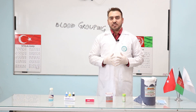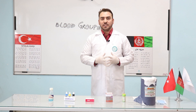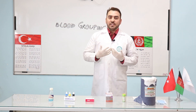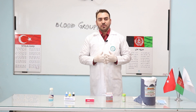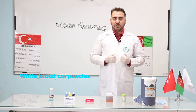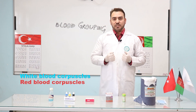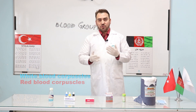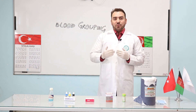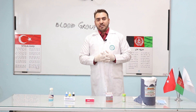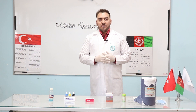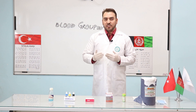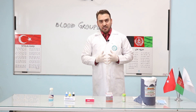An adult human has four to six liters of blood circulating in the body. The blood contains several types of blood cells, for example, white blood corpuscles or WBCs, red blood corpuscles or RBCs, and so on. Along with this, blood also has some particles — they are called antigens on the surface of the red blood cells.